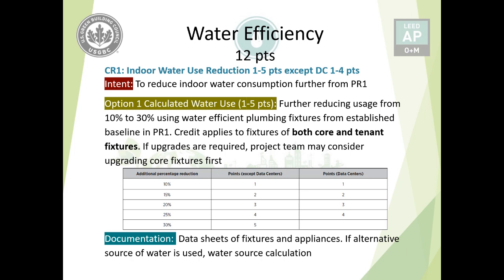There is a minimum of 10% improvement to start earning points. It would be really hard to push tenants or office renters to change their fixtures. Points are earned from 10%, 15%, 20%, 25%, 30% improvement, earning one, two, three, four, and five points respectively. In the case of data centers, it's only for documentation dealing with appliances and fixtures. You can also offset indoor water use by using an alternative water source, but you must submit the source and how much it is offsetting the indoor water use.